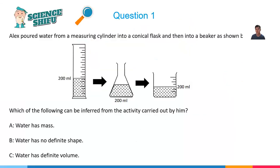LX poured water from a measuring cylinder into a conical flask. The conical flask is the diagram here in the middle and into a beaker as shown below. And based on the activity that LX has carried out, what can you infer?